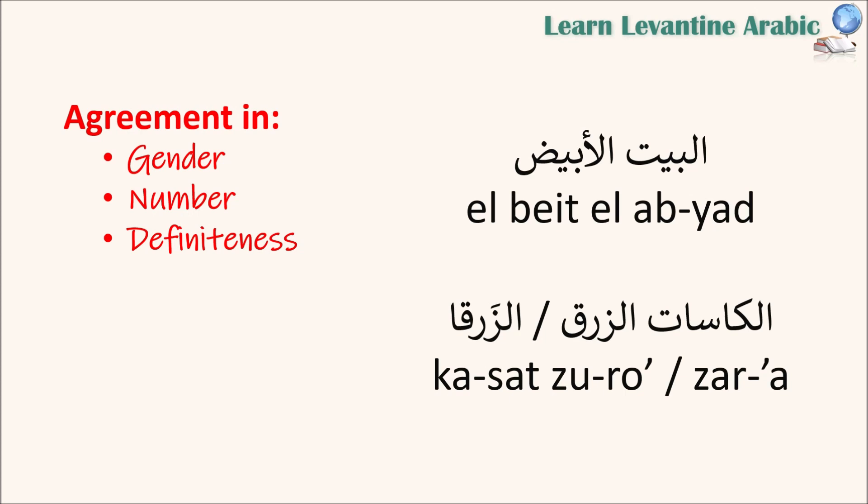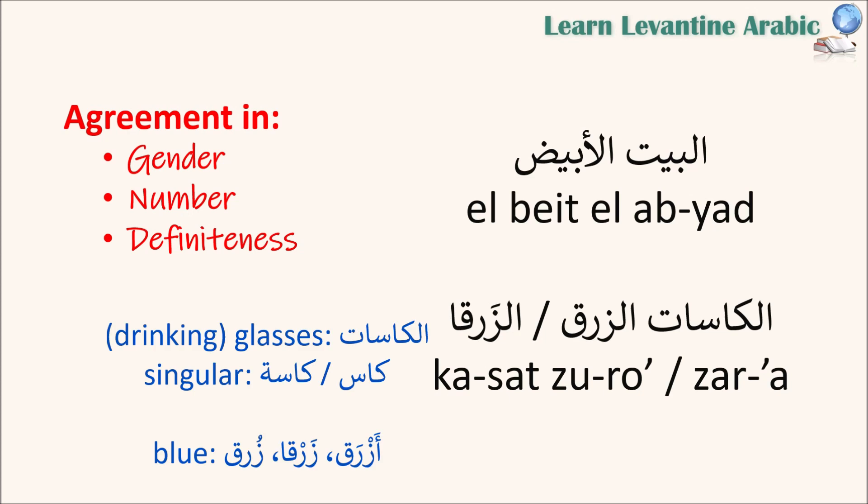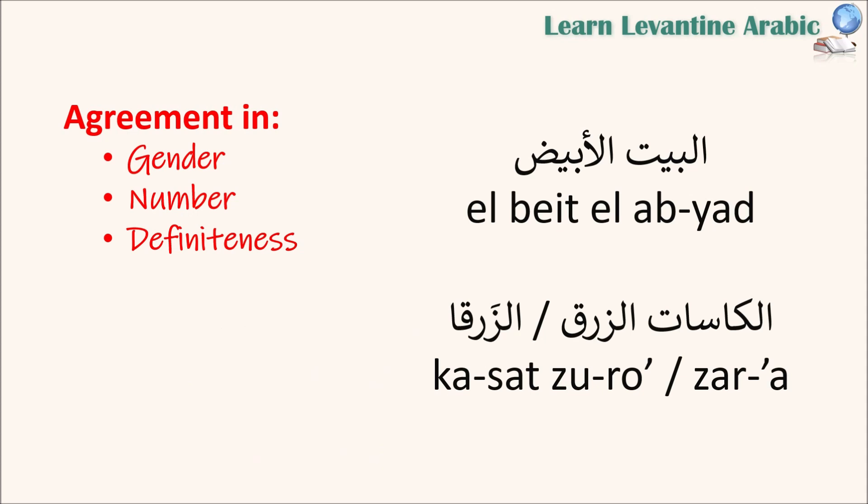The second example: الكاسات الزرق — the blue cups. Here we have the plural. If you learned standard Arabic, you might have learned that plural nouns usually take the singular feminine form of adjectives — for formal Arabic, that is correct. For dialect, however, that is not necessarily the case. Plural nouns can take the singular feminine form, like زرقا, or sometimes the singular masculine form, or sometimes the plural, as in زرق in this example. There are no clear-cut rules for this in dialect.